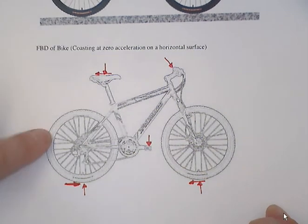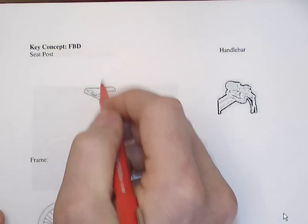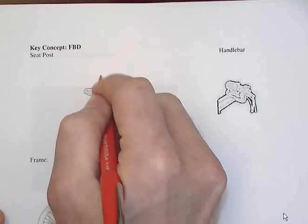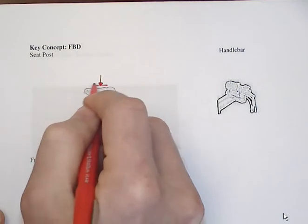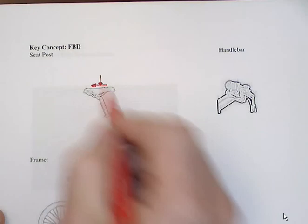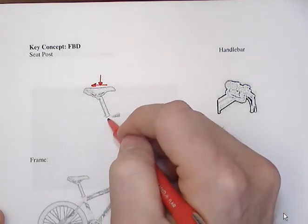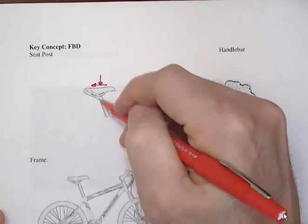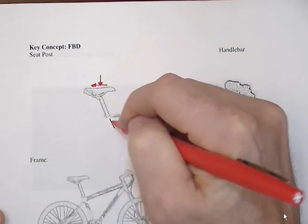For instance, if we go back to the seat post and we have the self-weight of a portion of the rider to the saddle as well as potentially a rearwards directed force, then when we go and cut the seat post, it's going to function a bit like a beam.